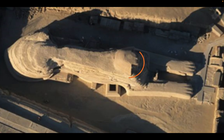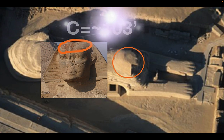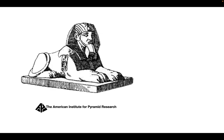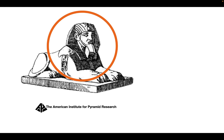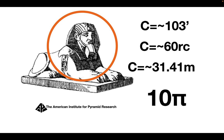The Sphinx key: let's look at the circumference of his head around his forehead. We're told that's about 103 feet, which is 60 royal cubits. And if you do it in meters, it's 31.41 — which is 10 times pi.